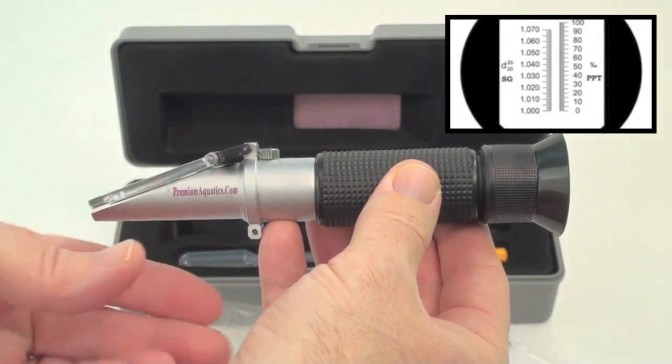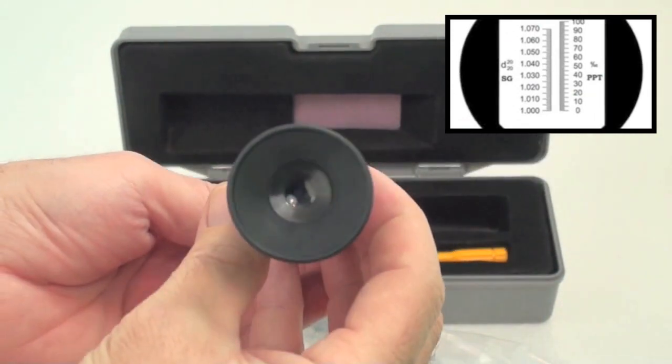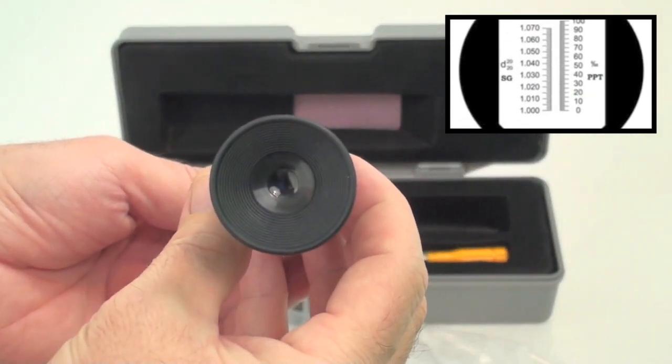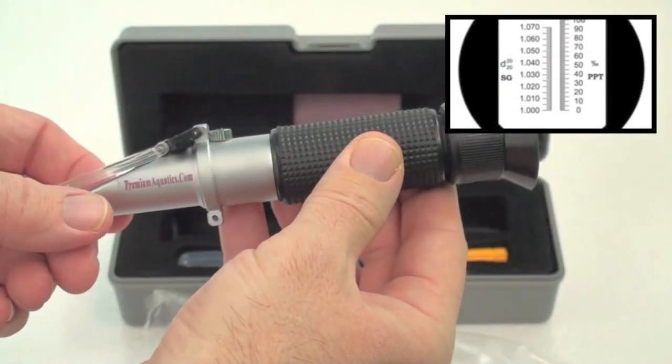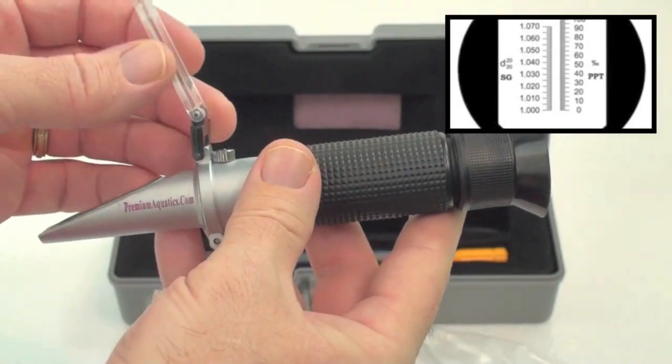Specific gravity can be measured within a range of 1.000 to 1.070 with an accuracy of plus or minus 0.001 specific gravity.